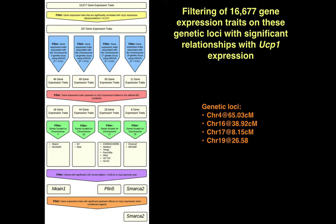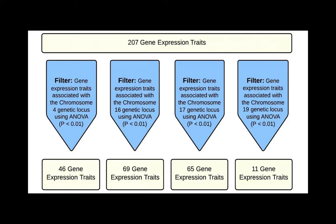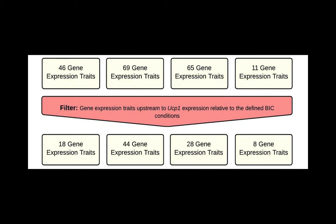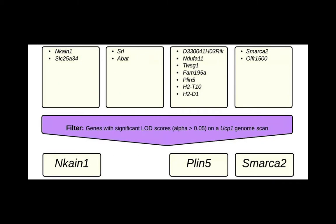To investigate these loci, we filtered through 16,677 gene expression traits collected from these mice. First, we filtered out all traits significantly correlated with UCP1 expression. Then we took that pool and filtered out traits significantly associated with the four genetic loci we had identified. This created four pools of genes. We then filtered out all traits statistically upstream to UCP1, based on defined Bayesian information criterion conditions. Finally, we filtered for genes on the specific chromosomes we were examining and under the peaks seen on the UCP1 genome scans, reducing the candidates down to a total of three gene expression traits.